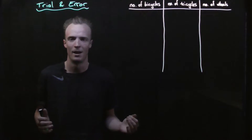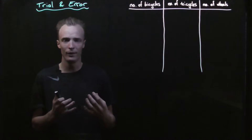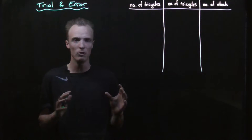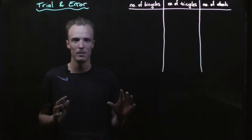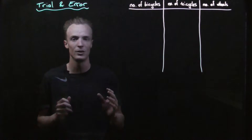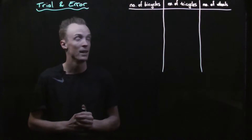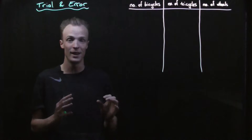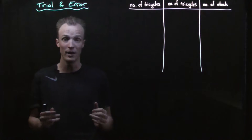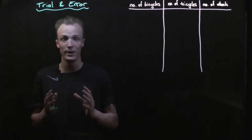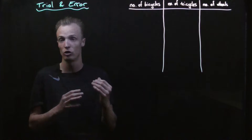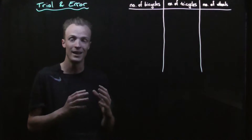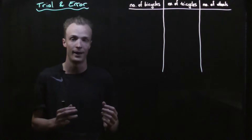So where should we start? The first thing I'm going to do is use trial and error. There's nothing wrong in mathematics with using trial and error. In fact, in this particular problem, due to the simplistic nature of it, trial and error is probably the quickest method, simply because the solution isn't complex.